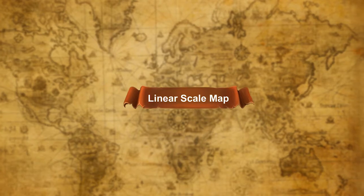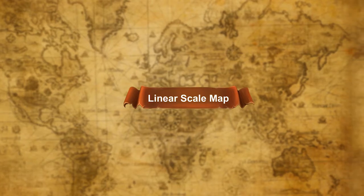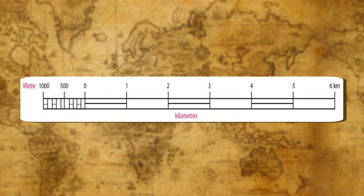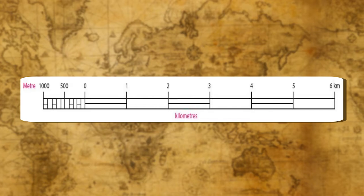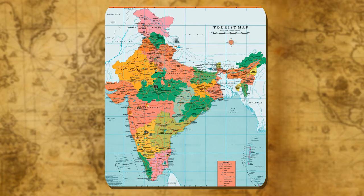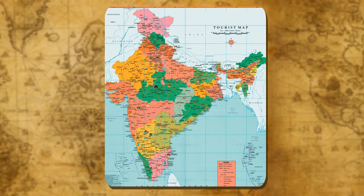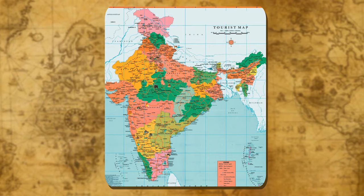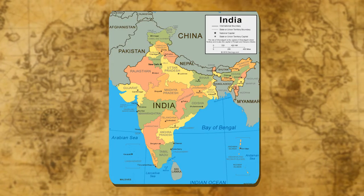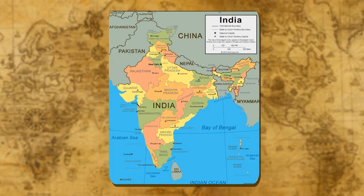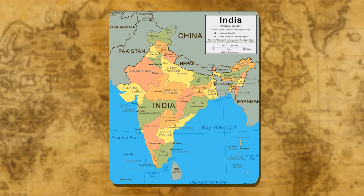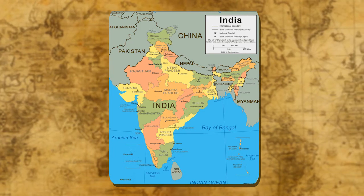Kinds of scale. Linear scale map: if the scale is drawn, it is called a graphic scale or linear scale. Small scale map: when a map shows larger areas on a small map, it is called a small scale map. In a small scale map, we can give very limited information. For example, the map of India is a small scale map.